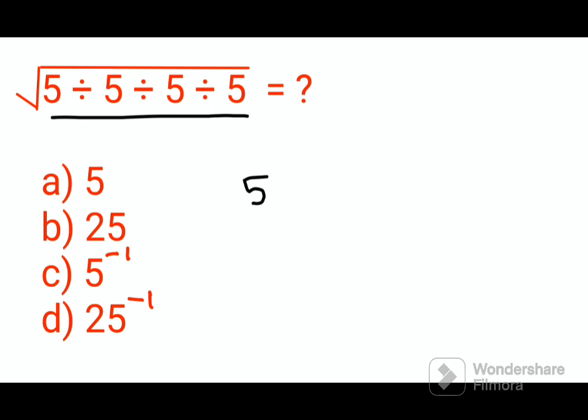Please understand, whenever you have a division sign you can convert it into a multiplication sign, but the only thing you need to work on is the number which is after this division sign should be written in reciprocal. So similarly, every other 5 after the division sign will be written as 1 upon 5.